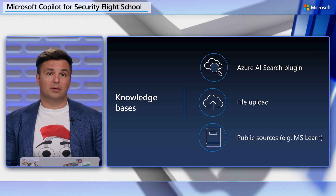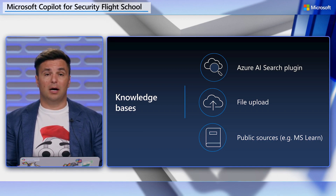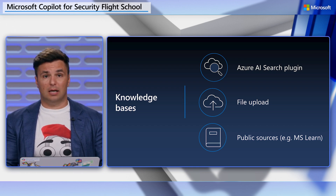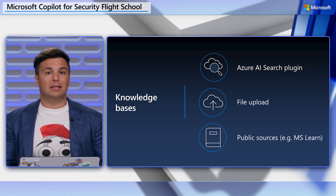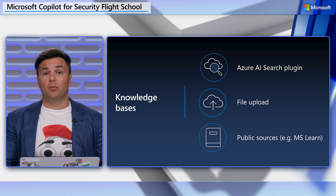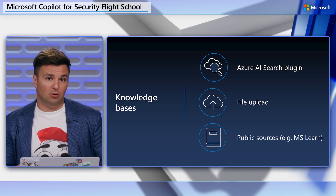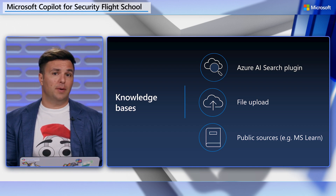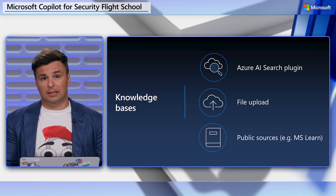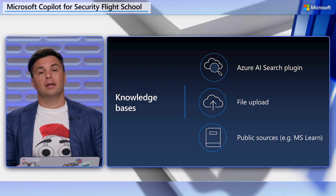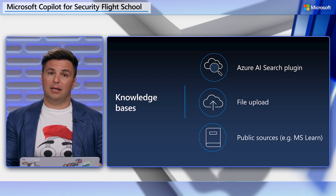Knowledge bases are another type of source available for the orchestrator to leverage. Knowledge bases, or KBs, could include your company policies, incident response procedures, standard playbooks for handling phishing alerts, or report templates for communications across departments. This is exciting because it means Copilot can leverage these resources within session context, giving you personalized support and further integration into your most critical workflows. For knowledge bases, there are two ways to bring in your organization's knowledge into Copilot: through file upload and through Azure AI Search. Let's briefly discuss using Azure AI Search by hopping into a demo.